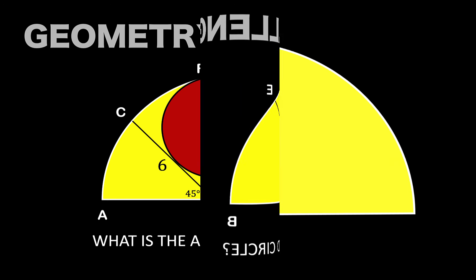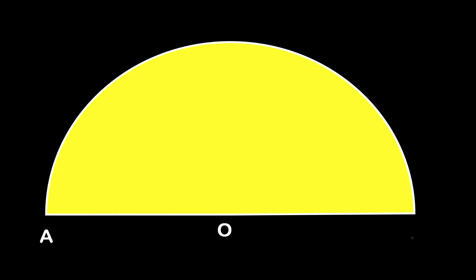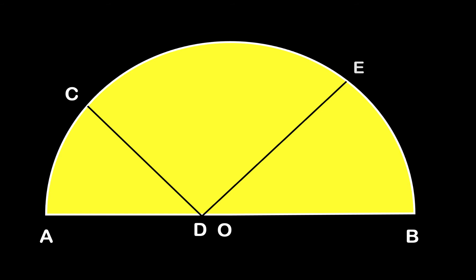Hey everyone, here's our math problem for today. Let's begin with this yellow semicircle and draw these two line segments CD and DE as shown in the figure. The measure of angle CDA is 45 degrees and the measure of angle EDB is also 45 degrees. The length of segment CD is 6 units and the length of segment DE is 8 units.